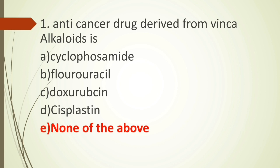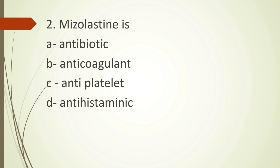Second question: mizolastine is — option A antibiotic, option B anticoagulant, option C antiplatelet, option D antihistaminic. Mizolastine is a non-sedating antihistamine, which is a second-generation antihistamine that mainly blocks the H1 receptor. The correct answer is option D. Please remember mizolastine is a non-sedating second-generation antihistamine with H1 receptor blocking action.